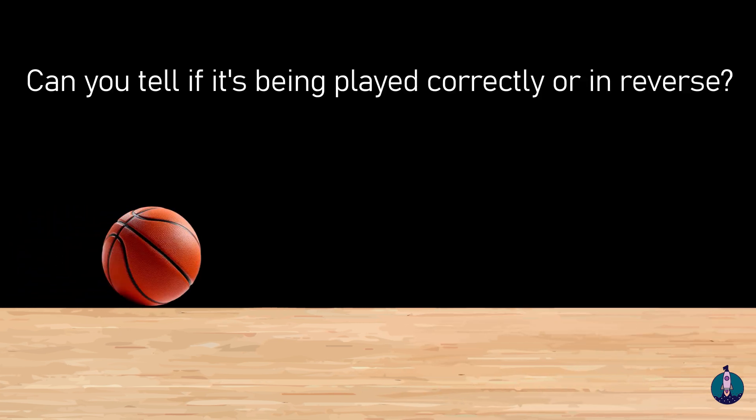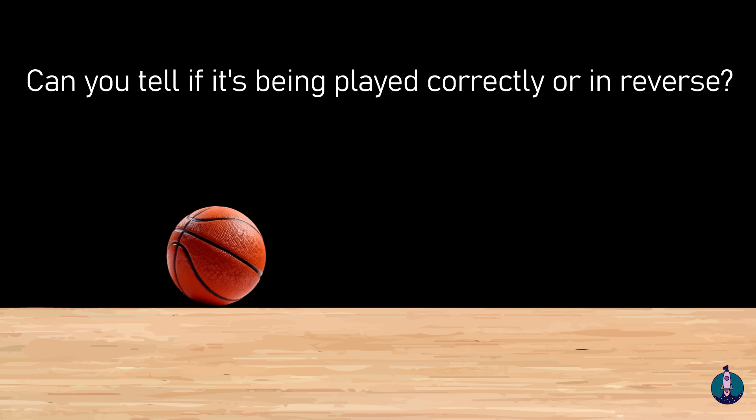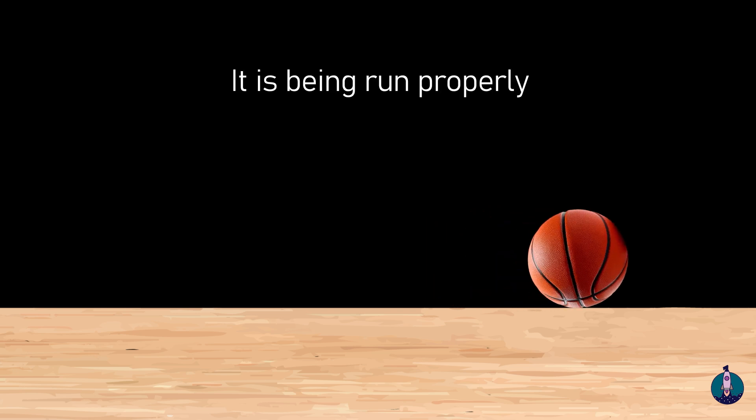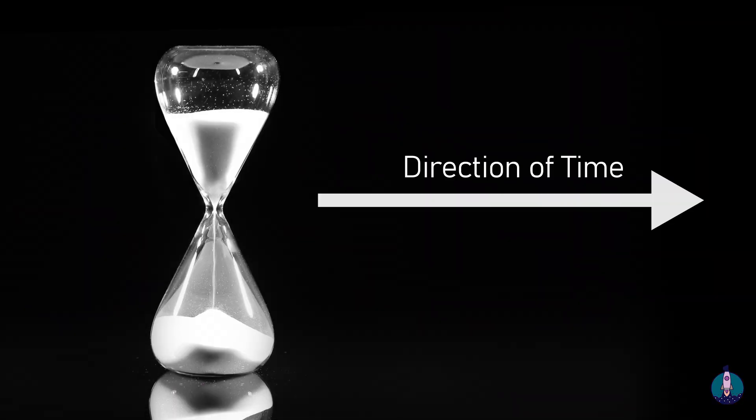You are seeing a film that shows a ball rolling. Can you tell if it's being played correctly or in reverse? We cannot tell. But what if the ball stops? Then we can tell it is being run properly. If you run it backward, the ball starts to move by itself, which is an impossible event.